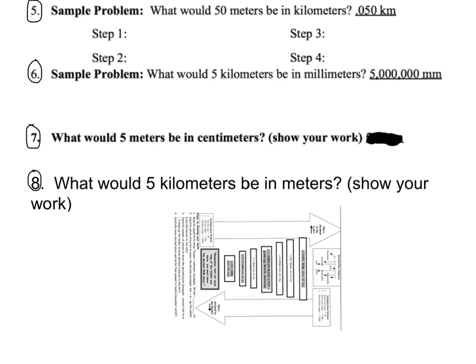So we're going to start with number five. Just like we learned in the metric ladder in the introduction video, our first step is we have to write known equals unknown. So we're trying to find how many kilometers are in 50 meters. Step two is we have to move the decimal.